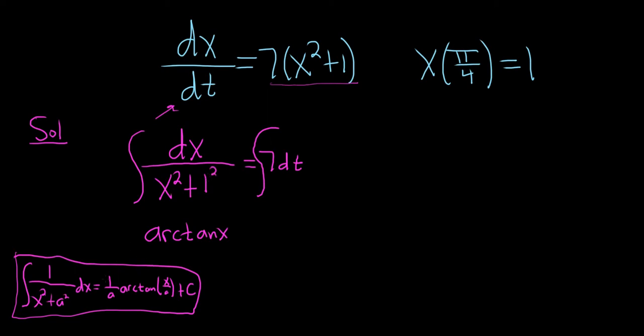A is 1 in this case. So it's just 1 over 1, arctangent of x over 1. So it's just arctangent. Integrating this, we get 7t plus C.